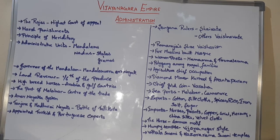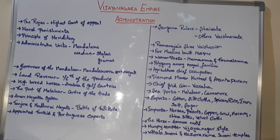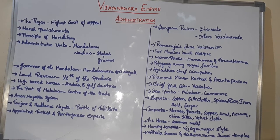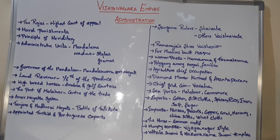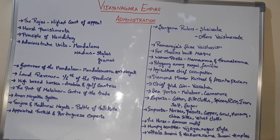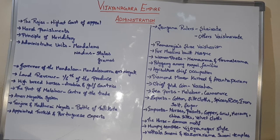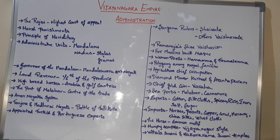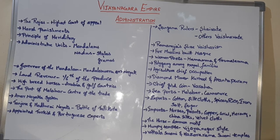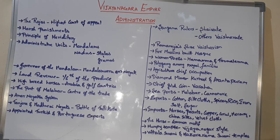The governors of the Mandalans are called Mandalaswara or Nayak. Full powers were given to the local authorities, not like the Cholas. The Vijayanagara Empire did not follow the Chola administration model; instead, they gave full powers to the local administrators.